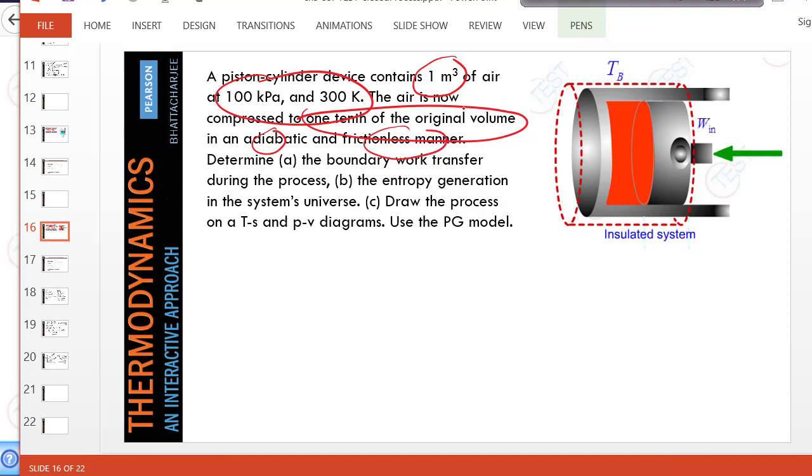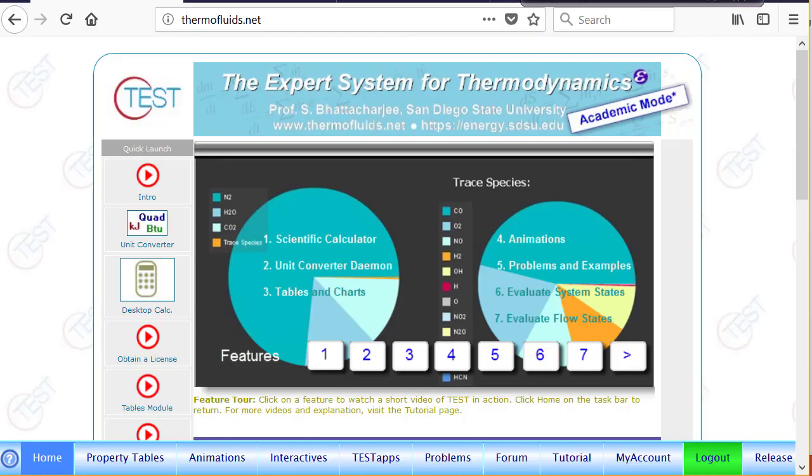It's a factor of 10. We'll see what happens if it's increased to 20—does that mean the boundary work will be twice as much or more? That'd be fun to calculate. So we go to TESTcalc, have already logged in, and we launch a suitable TESTcalc step.